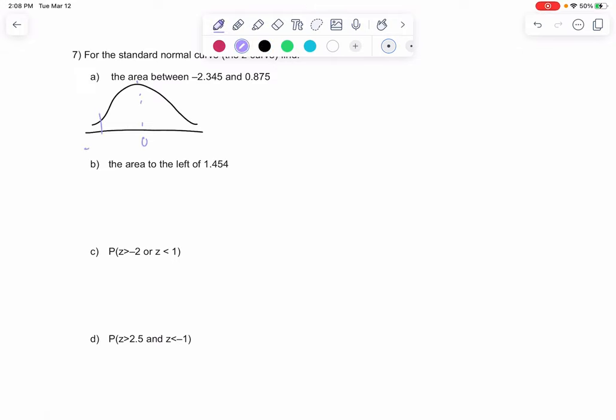We want the area between negative 2.345 up to 0.875. This is an approximation, but it looks like a good chunk of the curve. We're going to do normal CDF to find area, and we'll just do lower to upper. The calculator will do the work from here. I'm expecting a decent amount of area.